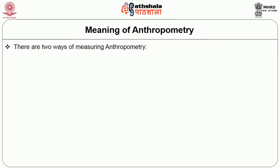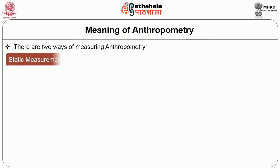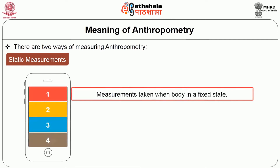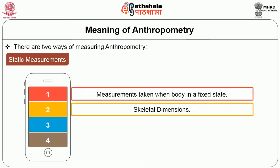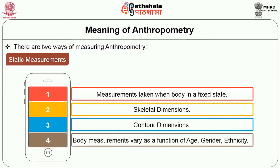There are two ways of measuring anthropometry: static and dynamic. Static anthropometric data is a basic set of numbered variables and brief descriptions of their use in ergonomics while the body is still. Static measurements are taken when the body is in a fixed state — skeletal dimensions between centers of joints such as the elbow and wrist, contour dimensions, skin surface, and head circumferences. Body dimensions can vary as a function of age, gender, ethnicity, and nutrition.